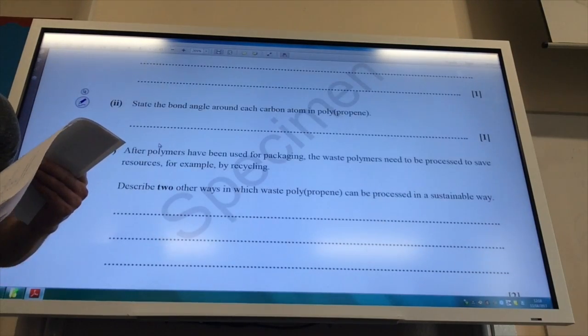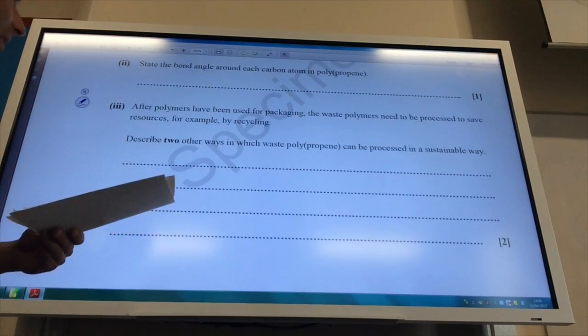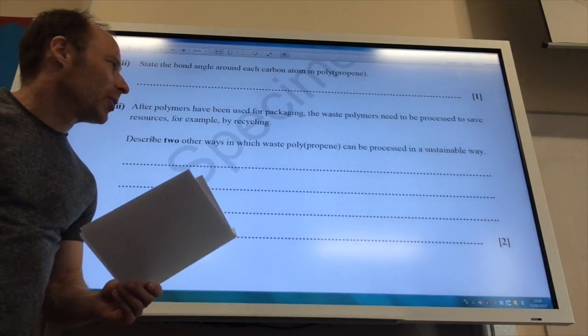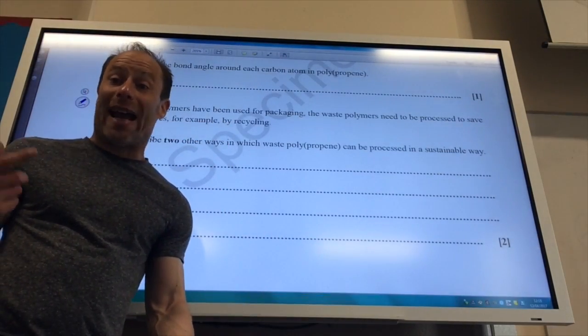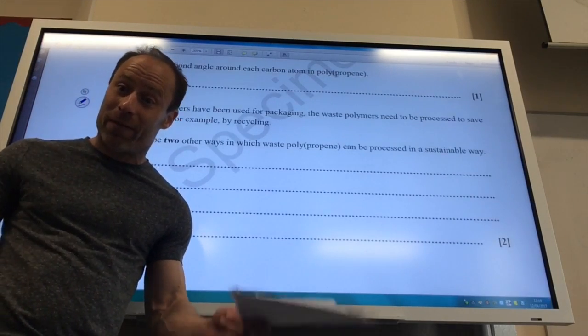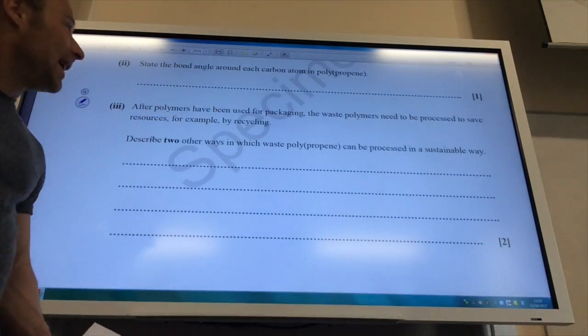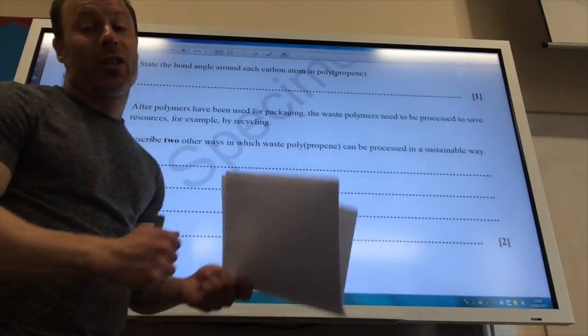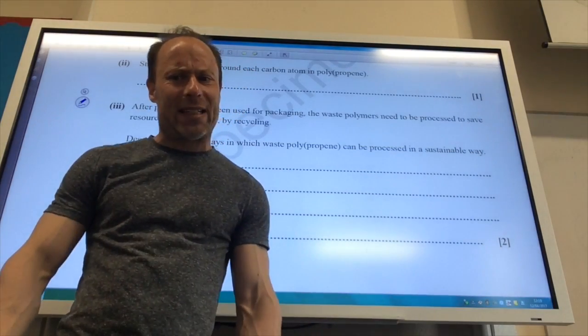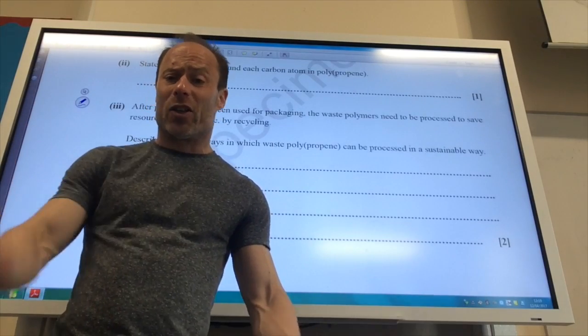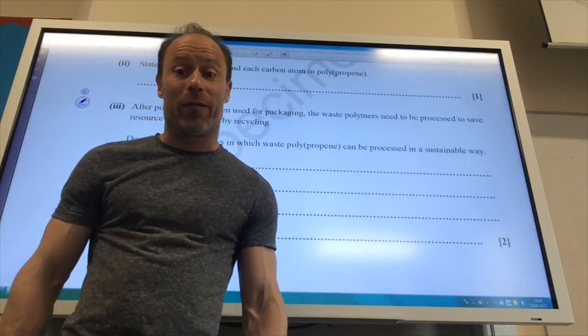After polymers have been used for packaging, they need to be processed to save resources, e.g. by recycling. Two other ways in which waste polypropene can be processed in a sustainable way. Well, you can burn them for energy production. You can't just say burn them. You can burn them for energy production because that's being sustainable. You're getting something from it. The other thing that you can do is you can actually crack them so you can break them up again. If you remember from GCSE, cracking crude oil, take a big molecule, crack it into smaller molecules. You can do the same for polymers. You can crack them up and then you can use those smaller molecules as organic feedstock for other processes.